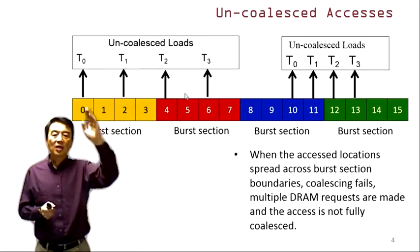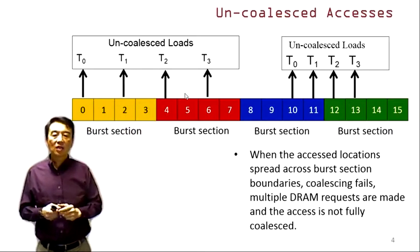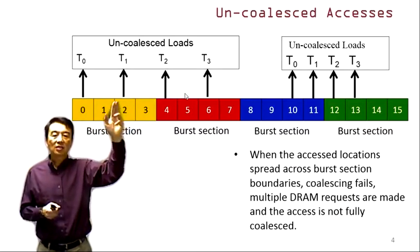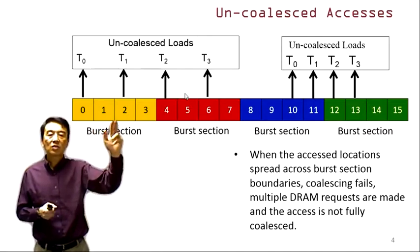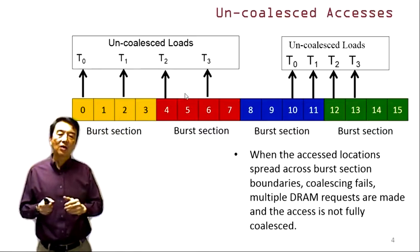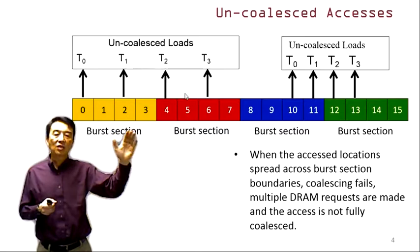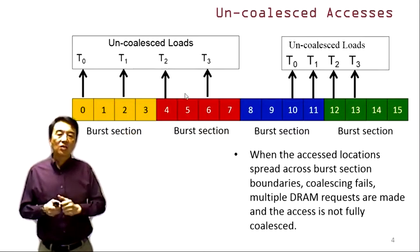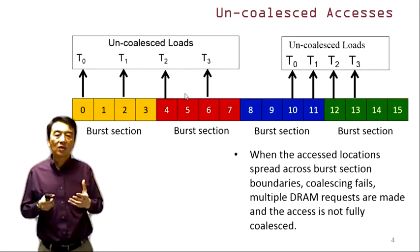We can have uncoalesced accesses for two reasons. One is when adjacent threads have a strided access pattern — threads zero through three no longer access adjacent locations but access locations that are two positions apart from each other. In this case, two burst sections are involved in the locations these threads access, so we can no longer satisfy all accesses with one DRAM request.